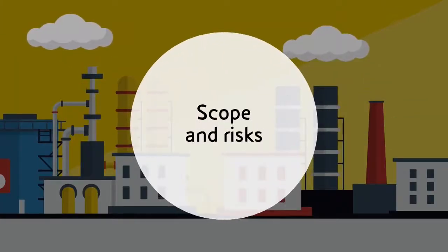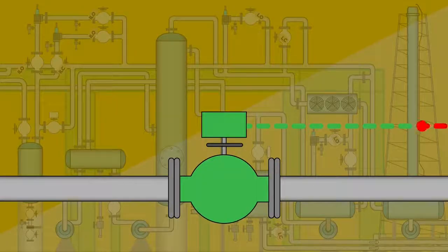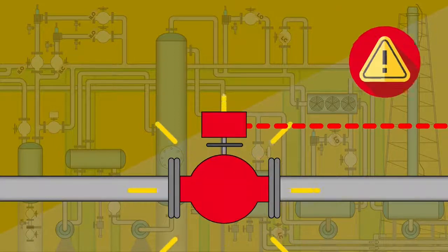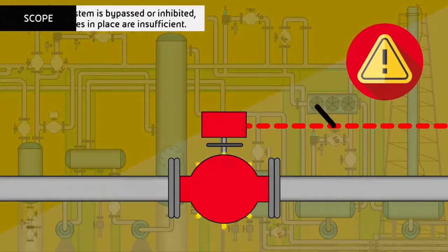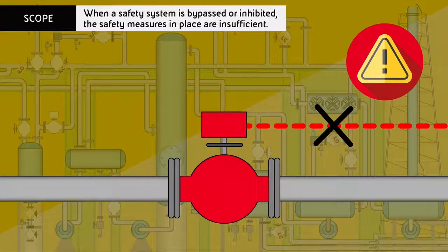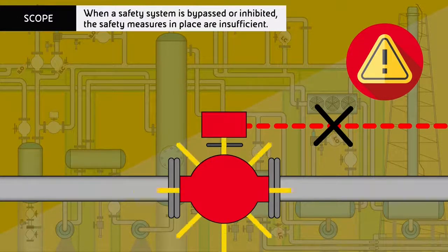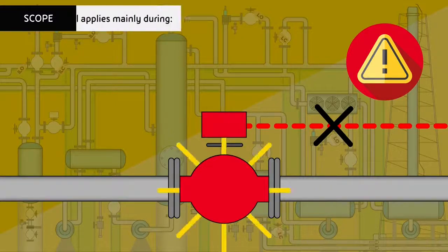Scope and risks. When a safety system is bypassed or inhibited, the safety measures in place are insufficient.